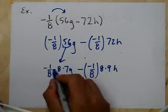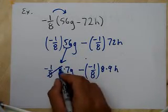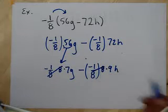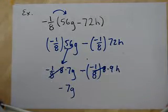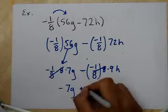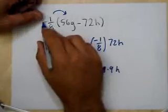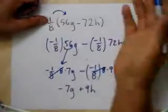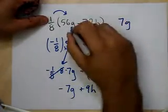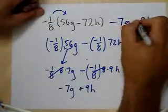Negative 1/8 times 8 equals negative 1, because a number times its reciprocal is 1, but we keep track of the sign. So we get negative 7g. Then minus and minus gives a positive, so we get positive 9h. Another way to think about it: 1/8 of 56 is 7, and 1/8 of 72 is 9, since multiplying by 1/8 is the same as dividing by 8. Then we apply the negative sign to get negative 7g plus 9h.